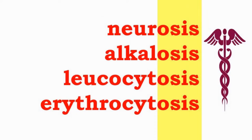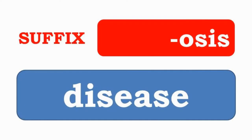Neurosis, alkalosis, leukocytosis, and erythrocytosis have the suffix -osis, which indicates a condition or disease.